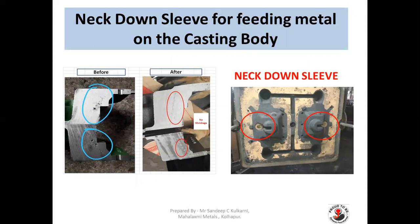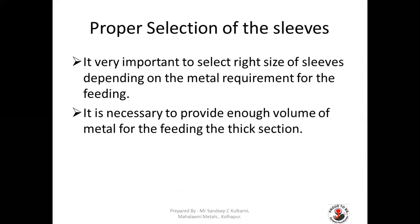Neck-down sleeves for feeding metal on the casting body are used most of the time when you are not able to feed at that particular point with an insulating sleeve, exothermic sleeve, or sand riser. The neck-down sleeve can be placed with a breaker core so that it can be easily knocked out. Proper selection of sleeve is very important — select the right size depending on the metal requirement. You have to calculate the volume required for that particular casting section and then select the right size sleeve.